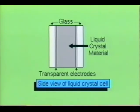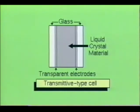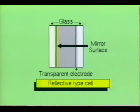The liquid crystal cell consists of a layer of liquid crystal material made from such compounds as cholesterol nonanoate and P-azoxyanisole, sandwiched between glass sheets with transparent electrodes deposited on the inside face of each glass sheet. When both glass sheets are transparent, the cell is known as a transmittive-type cell. Whereas when only one glass sheet is transparent and the other sheet has a reflective coating, it is known as a reflective-type cell.